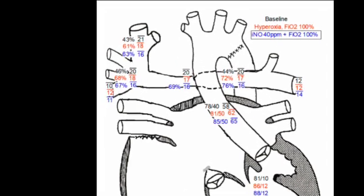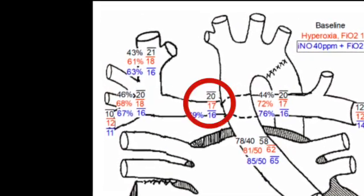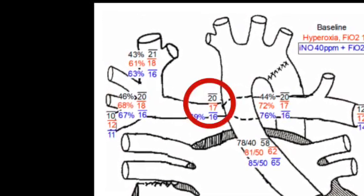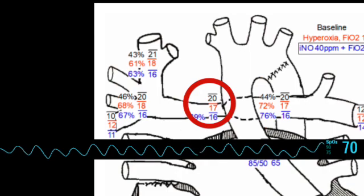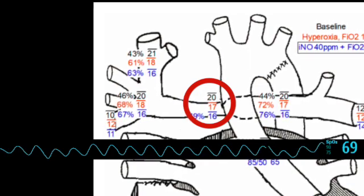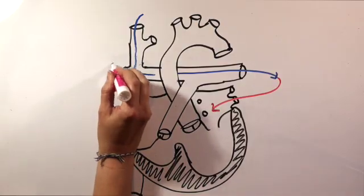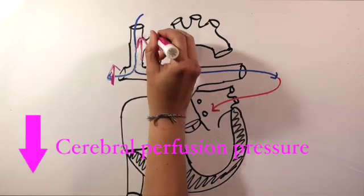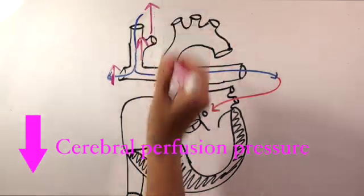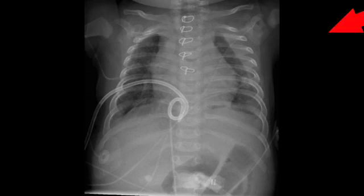High PA pressures after the Glenn can cause a few problems. First, it decreases pulmonary blood flow, which will result in cyanosis. Second, back pressure from high SVC pressure can cause decreased cerebral perfusion pressure and a wicked headache. Third, higher venous pressures may contribute to pleural effusions, which can be problematic after the Glenn.